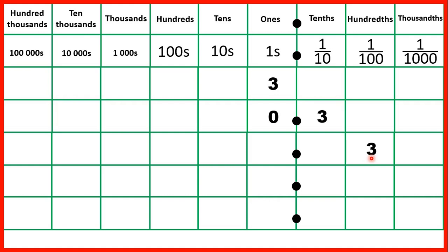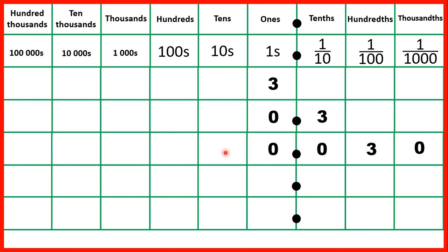What if we have three hundredths? All of our other place values are really zeros, but we don't need zeros in our whole number place value columns except for our ones column, and we don't need zeros on the end of decimals. But we do need this zero in our tenths, because we need to show three hundredths. Our hundredths place value column is always the second place value column after the decimal point, so if we didn't have zero in our tenths, the three would be in our tenths — but we need to show three hundredths, so that has to be the second digit after the decimal point.